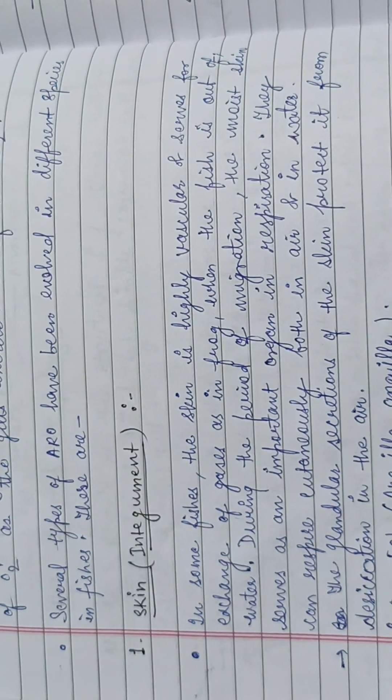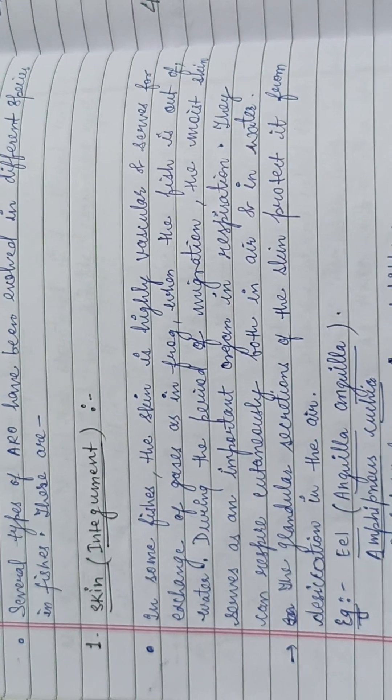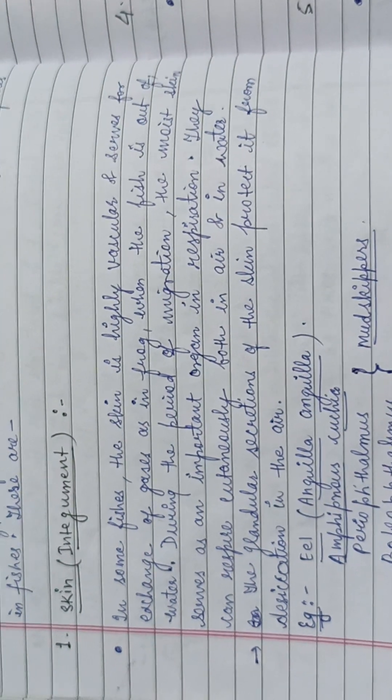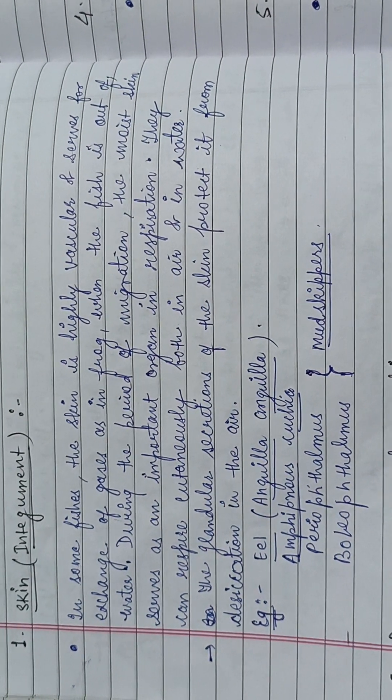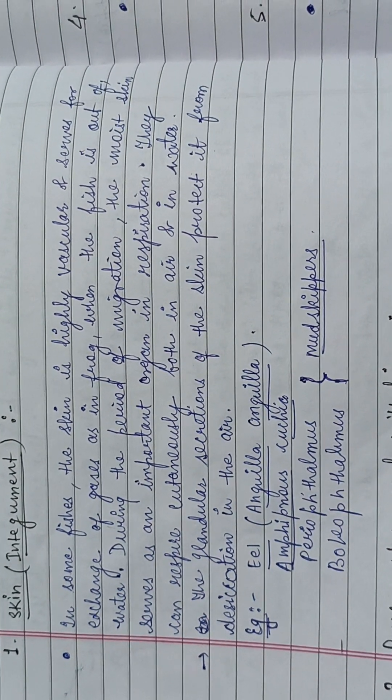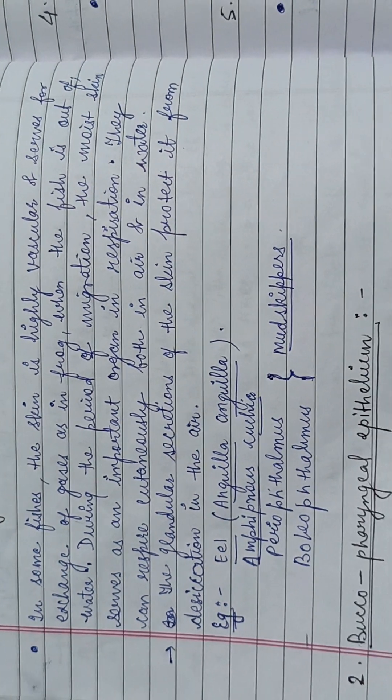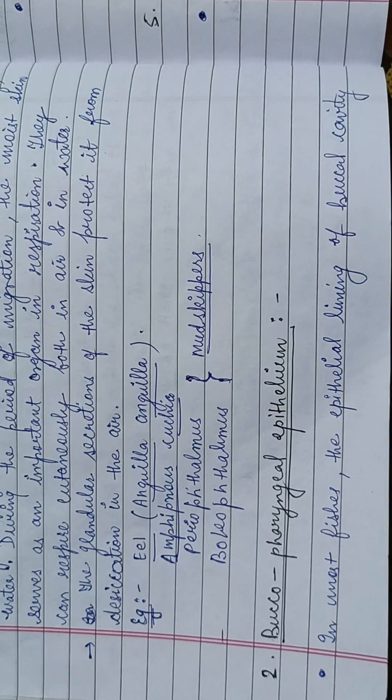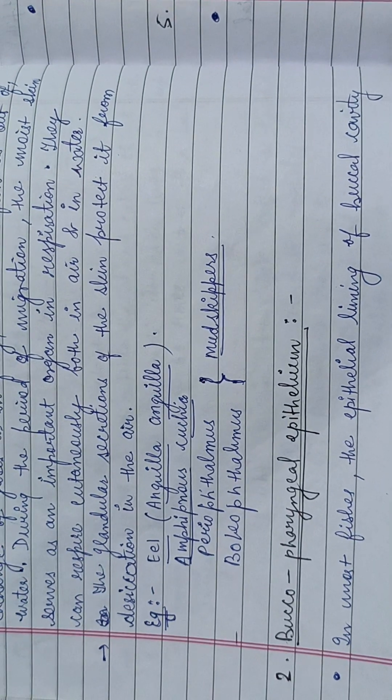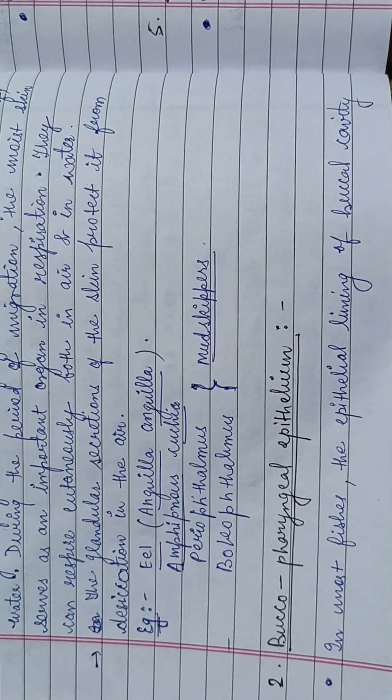Several types of ARO exist. First is the skin through the integument. In some fishes, the skin is highly vascular and serves for the exchange of gases, as in frogs. When the fish is out of water during the period of migration, the moist skin serves as an important organ in respiration. Examples are Amphipnous, Cuchia, Periophthalmos, and Boleophthalmos, together called mudskippers.